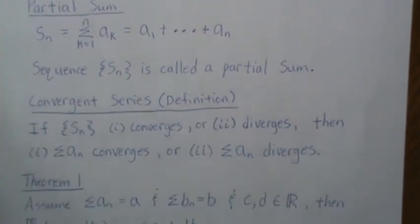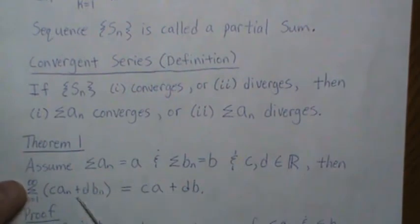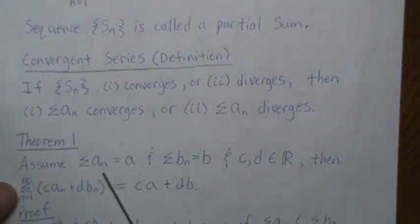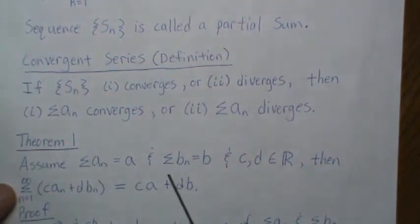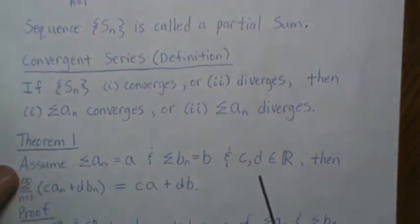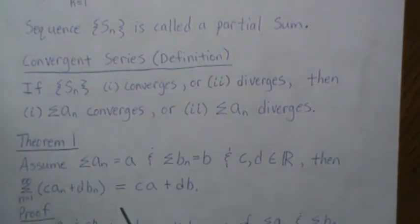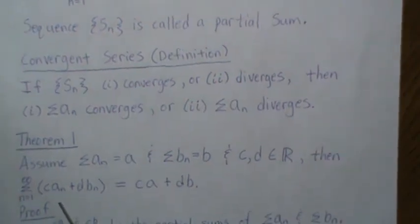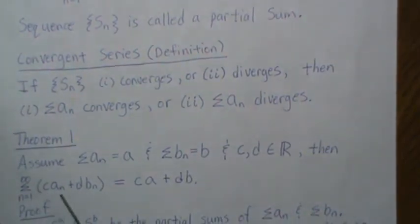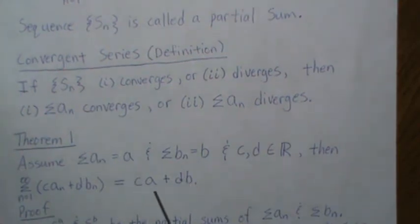And the first theorem is, let's assume that our series converges to A. And this series, BN converges to B. And let's let C and D be real numbers. Then this series, the sum from 1 to infinity of the C times AN plus D times BN is equal to C times A plus D times A.